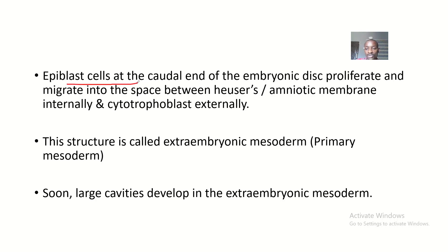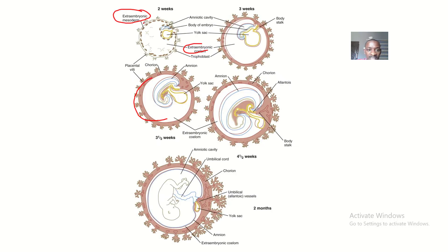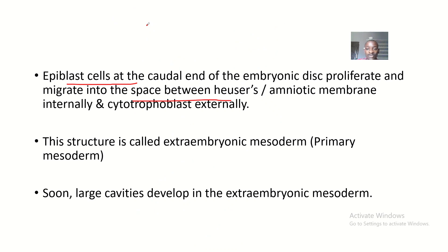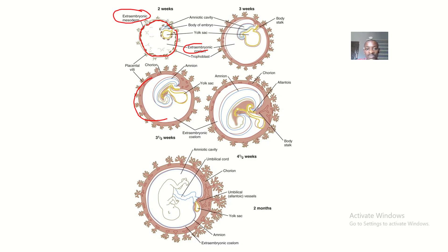Epiblast cells at the caudal portion of the embryonic disc proliferate and migrate into the space between the Heuser's membrane — or the amniotic membrane — internally, and the cytotrophoblast externally. So, epiblast cells are migrating to occupy the space between the Heuser's membrane and the cytotrophoblast. The type of trophoblast is the altamose, and the Heuser's membrane is intact.